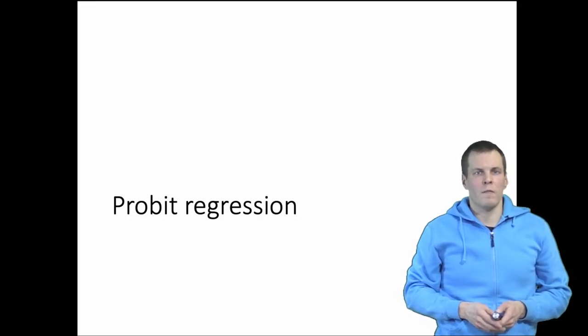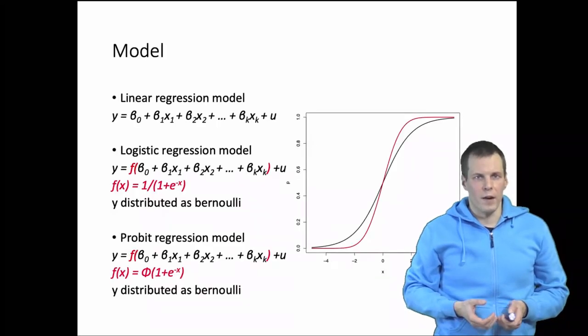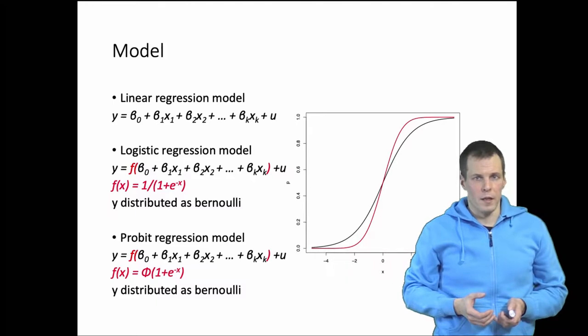The probit regression is a model that is related to logistic regression analysis. Both these models are used for binary dependent variables and they differ in the link function.